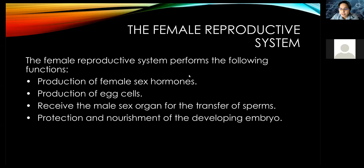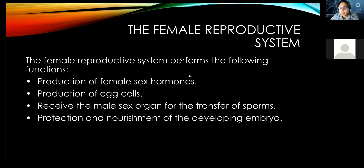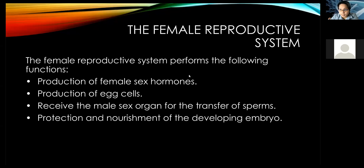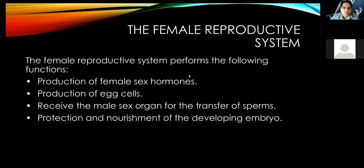Number three: receive the male sex organ for the transfer of sperm — this is in the reproductive stage. Number four: protection and nourishment of the developing embryo in the uterus. First is the production of female sex hormones in the ovary; second, production of egg cells also in the ovary; third, receive the male sex organ for the transfer of sperm; and fourth, protection and nourishment of the developing embryo.